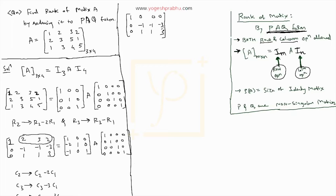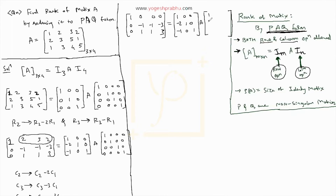After the column operations, the A portion becomes reduced. Column operations are performed on the I₄ matrix, not the I₃ matrix. So I₃ remains as is. Applying those column ops to I₄: column 1 stays 1 0 0 0, column 2 becomes minus 2 1 0 0, column 3 becomes minus 3 0 1 0, and column 4 becomes minus 2 0 0 1.